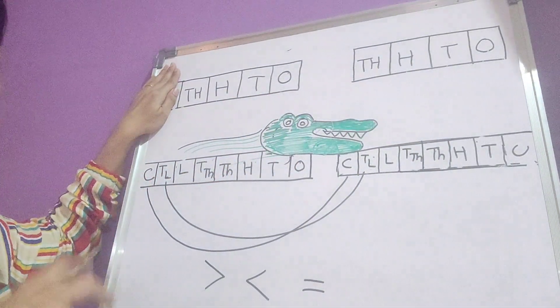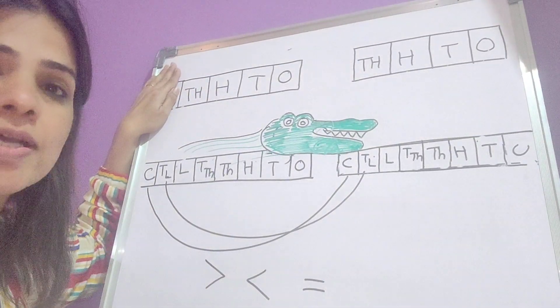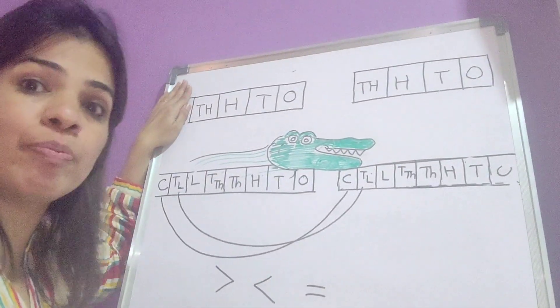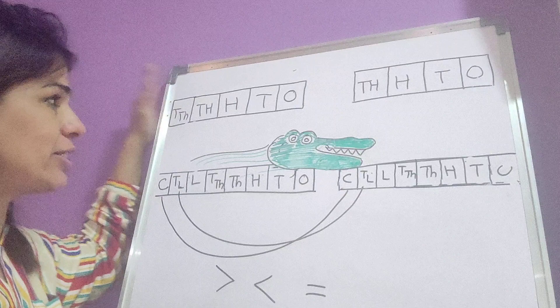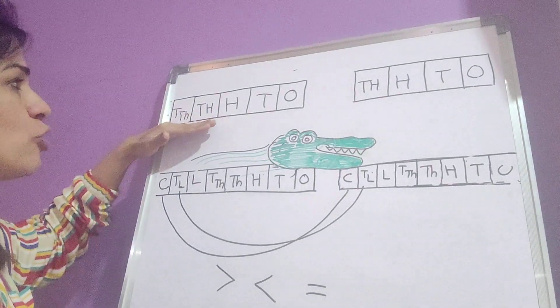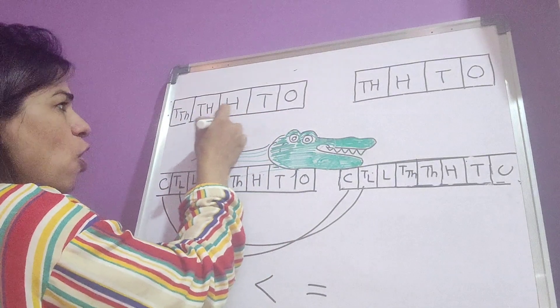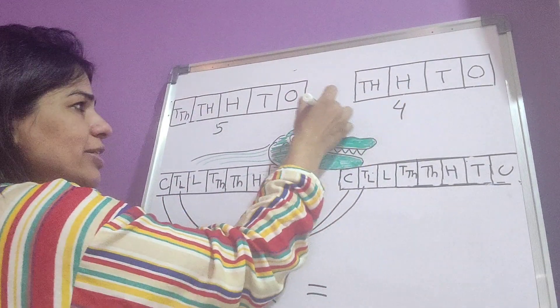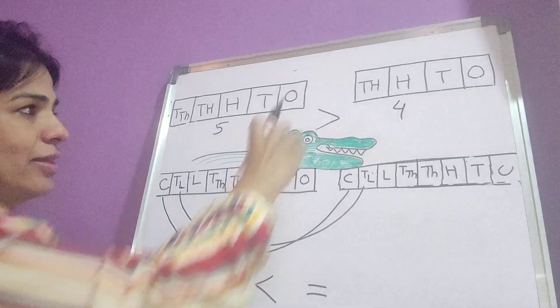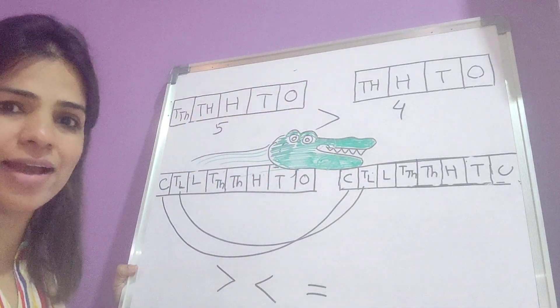And suppose if one of the two numbers, something is already bigger by the total number of digits. Like in this case, this is total five-digit number and this is four-digit number, so definitely this number is going to be bigger and the alligator is going to eat that.